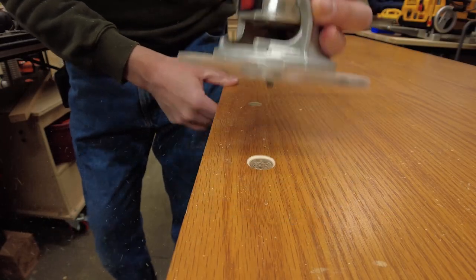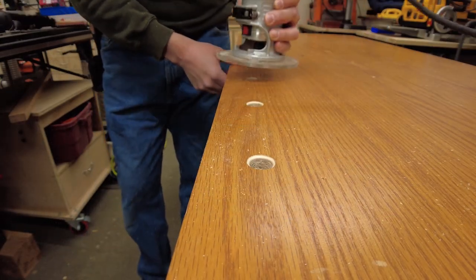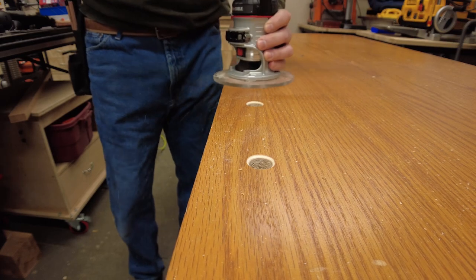And the last thing I want to do is knock off all the sharp corners on each of the dog holes using a chamfering bit in my trim router.